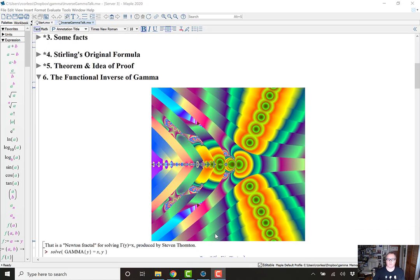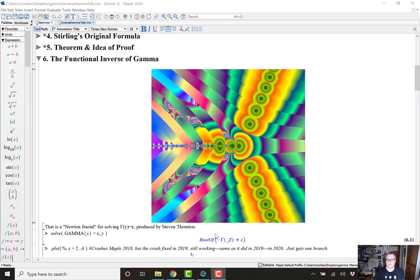And I want to give you how to compute the functional inverse, not the reciprocal, the functional inverse of the gamma function in the complex plane. Here's a picture of that function done by Newton's method. You get a Newton fractal. And this Newton fractal was produced by Stephen Thornton. And I just love the picture. And I hope you do too.